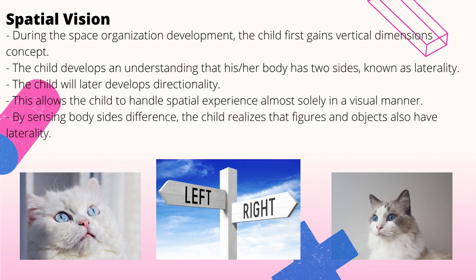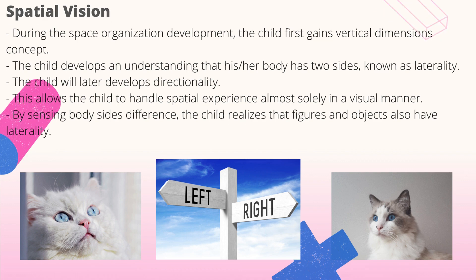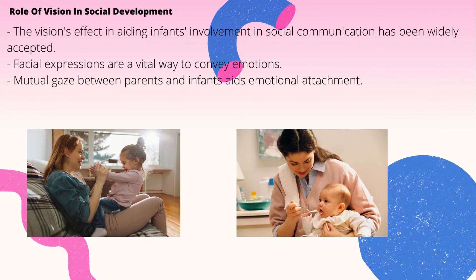The child later develops an understanding that his or her body has two sides — known as laterality, the right side and the left side — which also proceeds in stages. The child then develops directionality, which is an understanding of external objects' positions in space in relationship to themselves. This allows the child to handle spatial experiences visually, and by sensing body size differences, the child realizes that figures and objects also have laterality — a right side and a left side, known as bilateral.